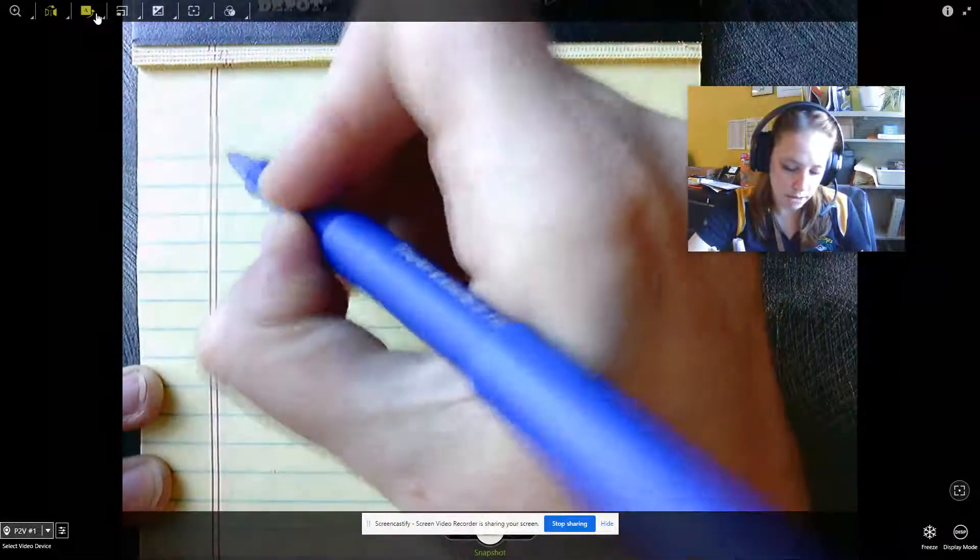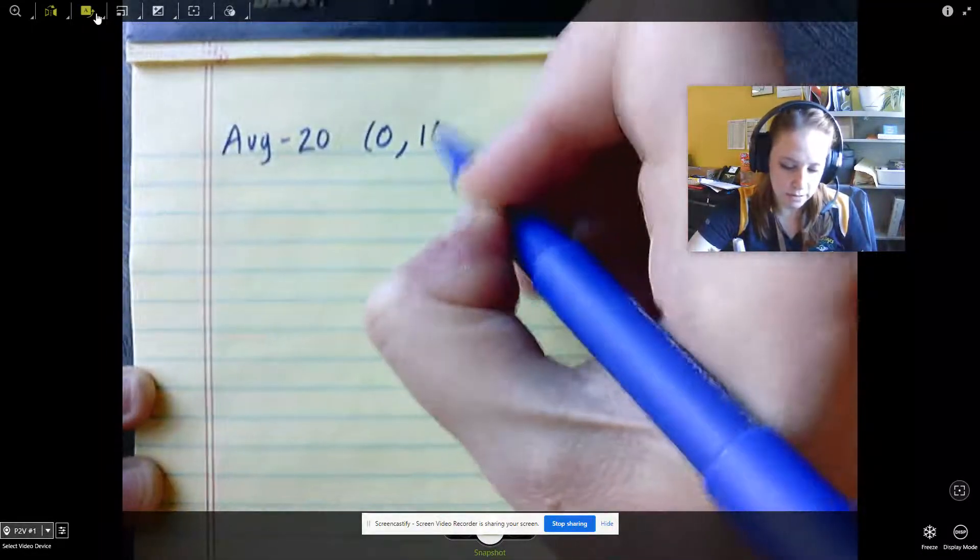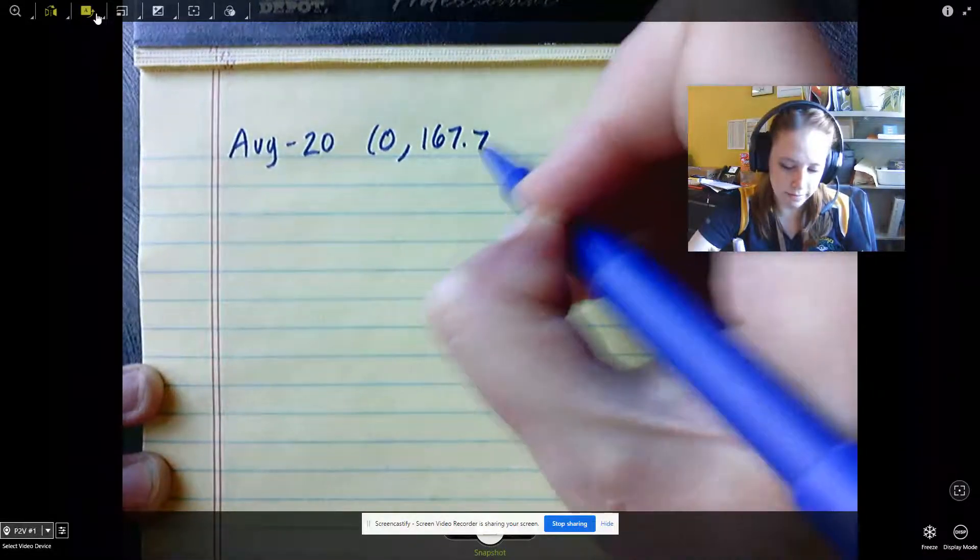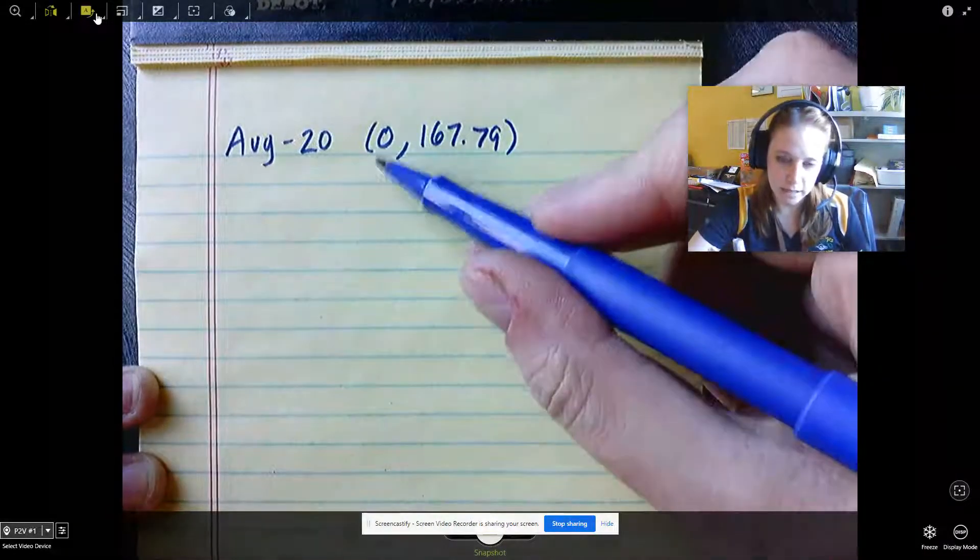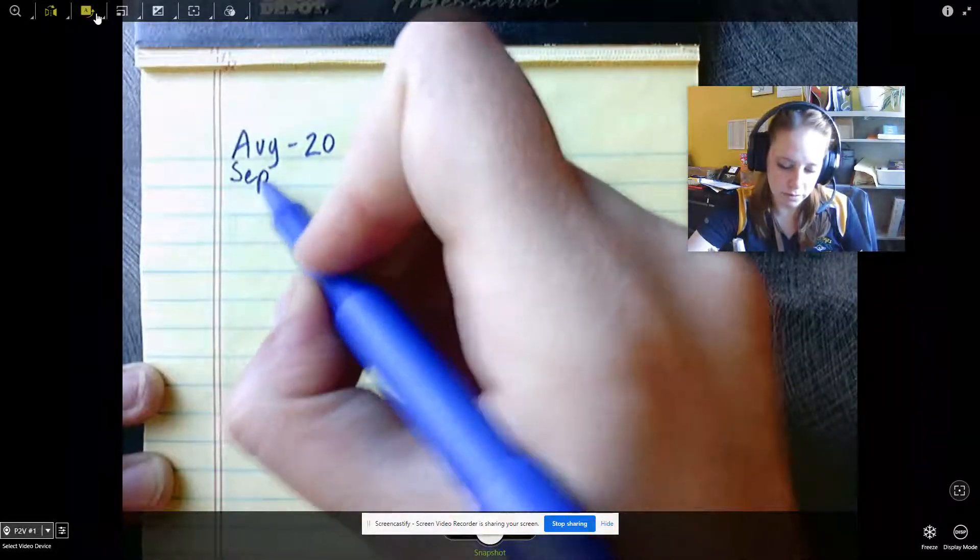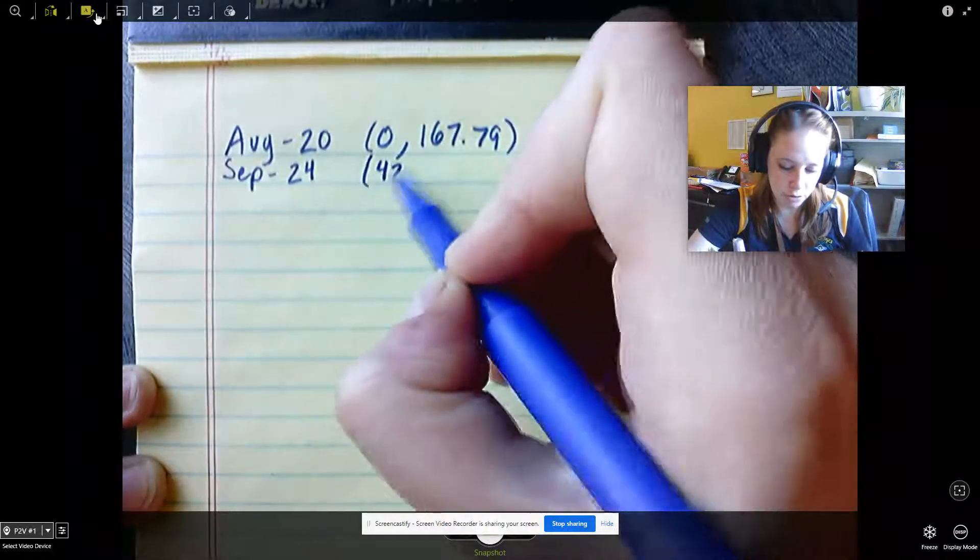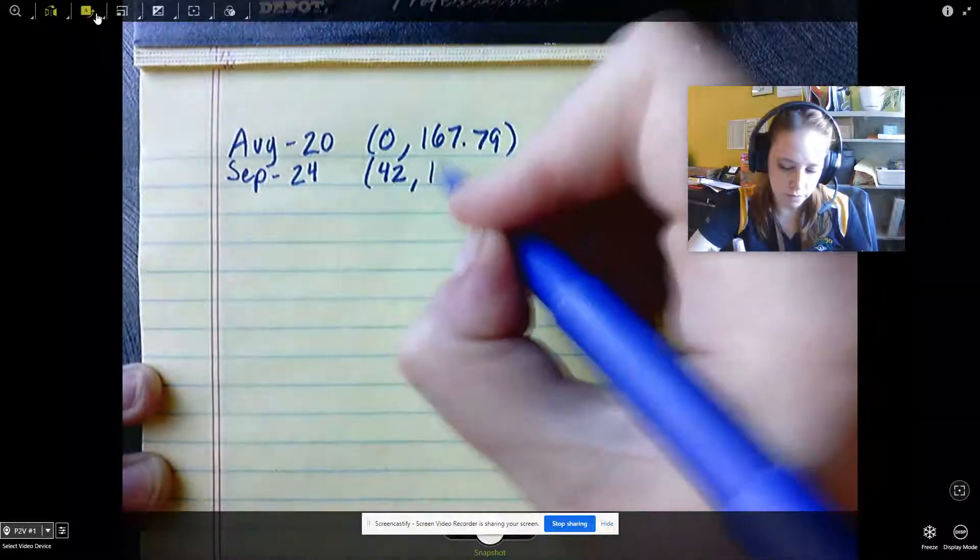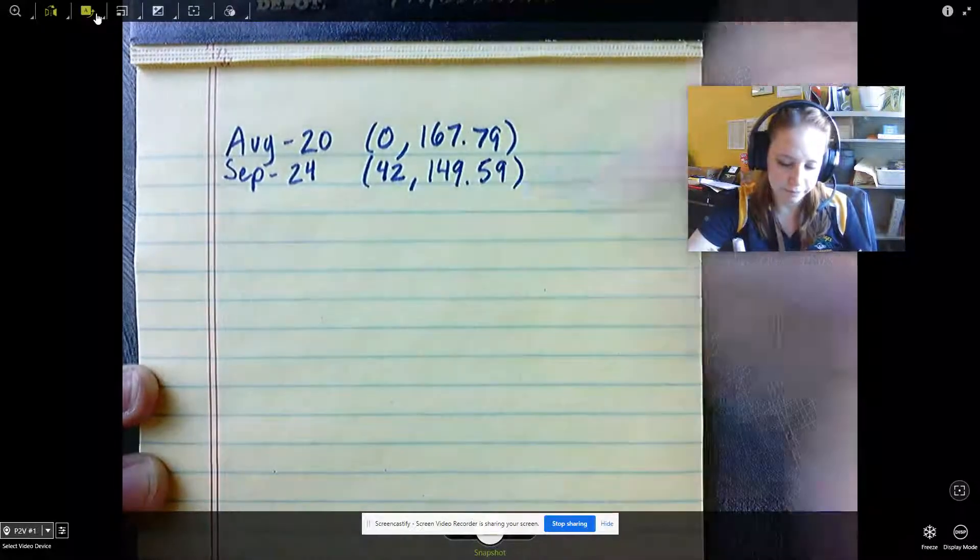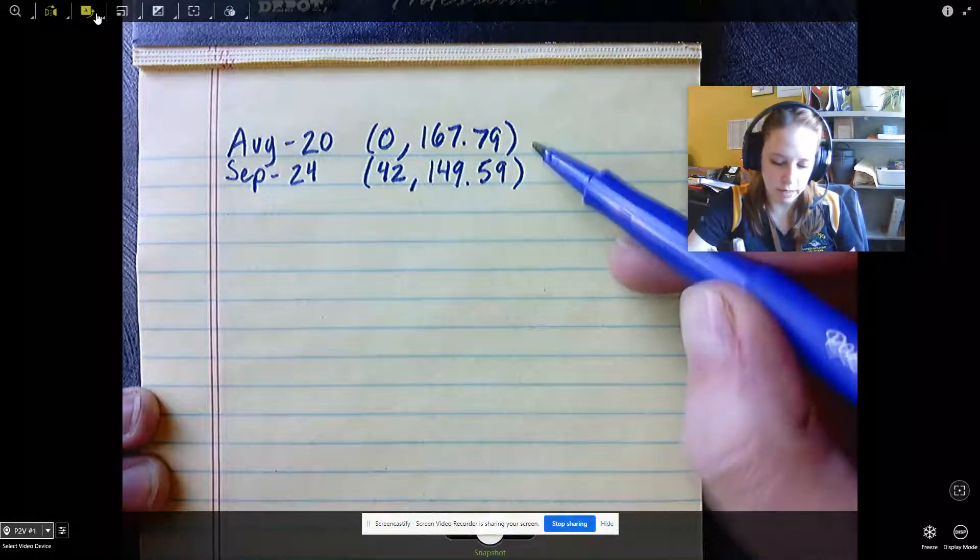August 20th can be written as 0, 167.79, because that's going to be our starting value. And September 24th is going to be 42, 149.59. So now I've taken those two dates and turned them into coordinate points.